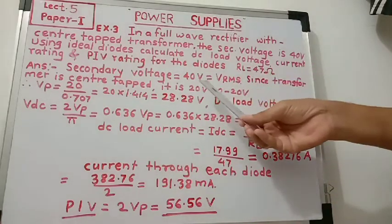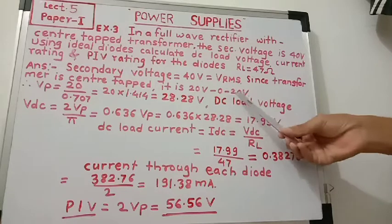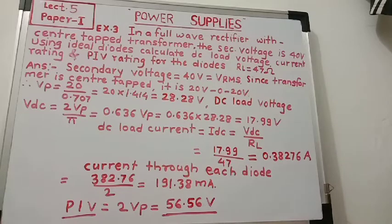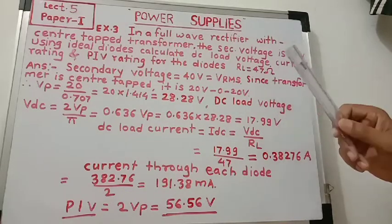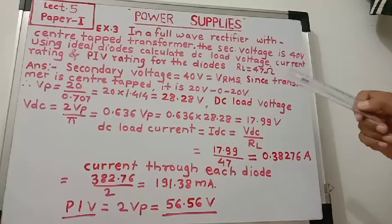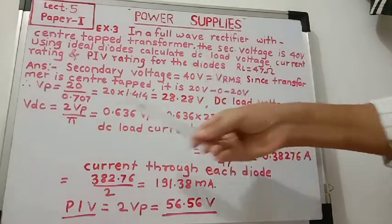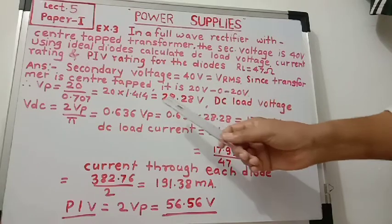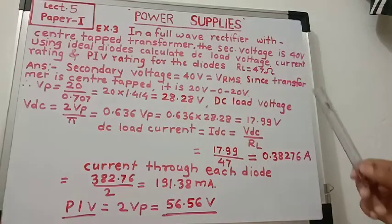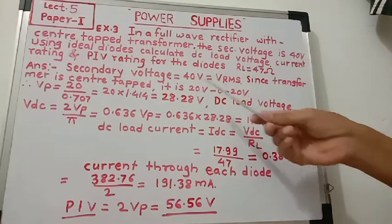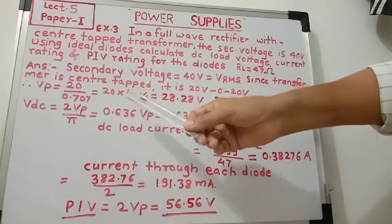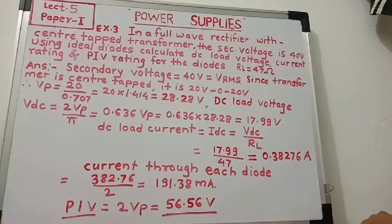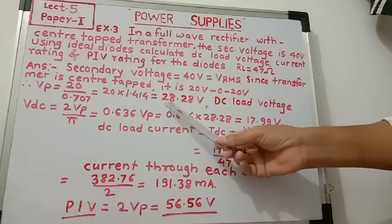So the transformer is 20 volts on each half, meaning 20 plus 20 equals 40. We know that peak voltage Vp is equal to root 2 into Vrms, where root 2 is equal to 1.414. So Vp is equal to 1.414 into 20. The peak voltage Vp equals 1.414 into 20, or equivalently 20 divided by 0.707, and it is equal to 28.28 volts.